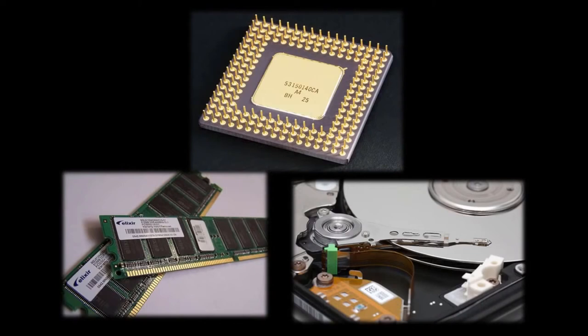The hardware of a computer system can usefully be described as composed of basically three parts. First you have the CPU, the central processing unit. Second, the system memory. And third, what's called I/O, short for Input-Output, which comprises everything else.